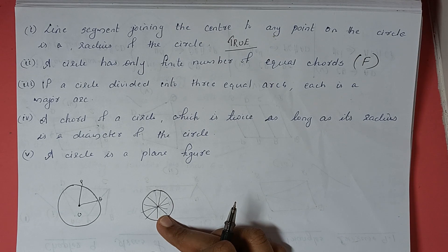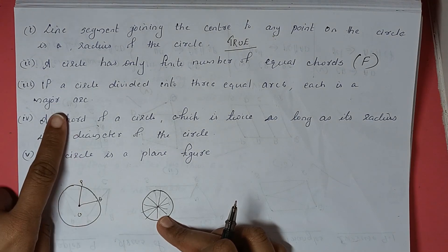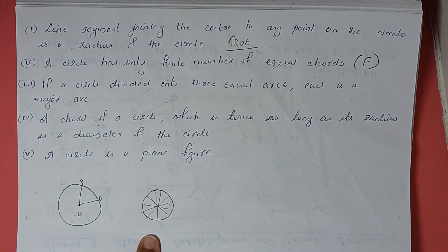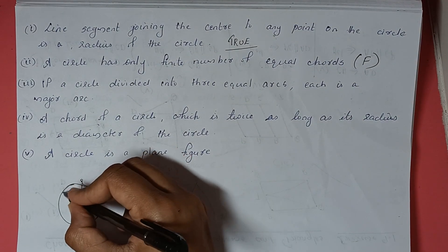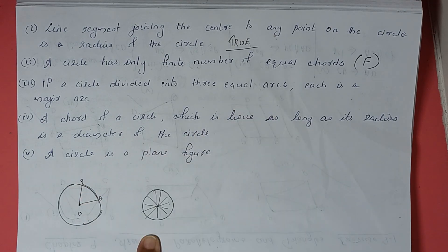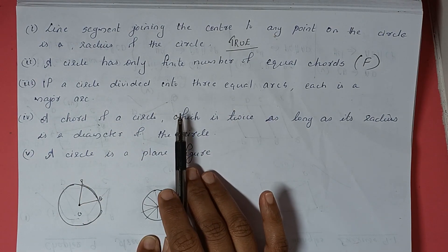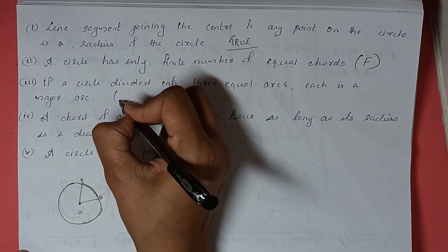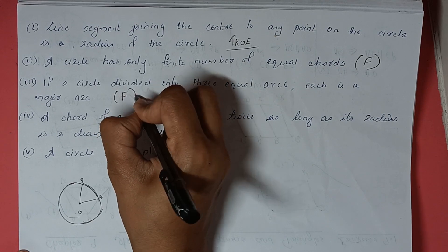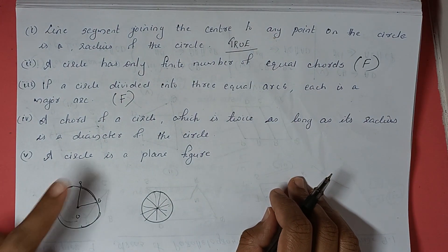Third: if a circle is divided into three equal arcs, each is a major arc. If we divide the circle into three equal parts, each part is one arc. A major arc means it should cover more than a semicircle. When divided into three equal parts, none of them covers more than a semicircle, so each one cannot be a major arc. This statement is false.